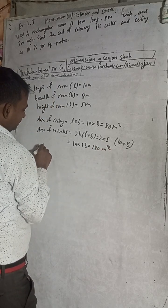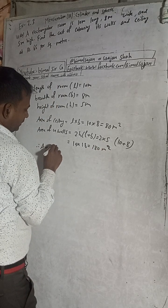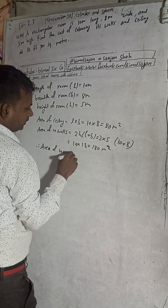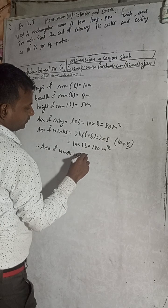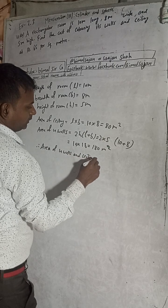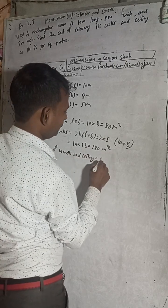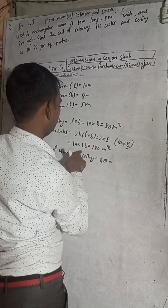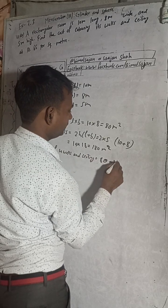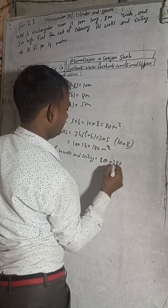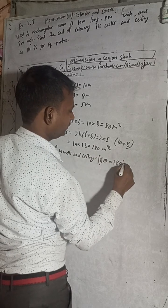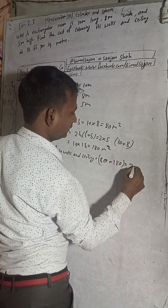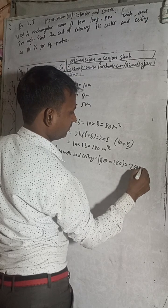Therefore, area of 4 walls and ceiling is equal to 80 (ceiling) plus 180 (4 walls). The total is 260 square meters.